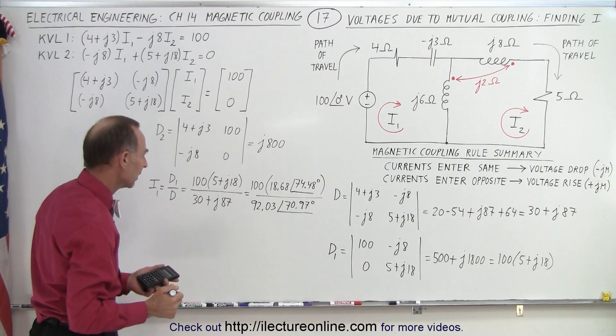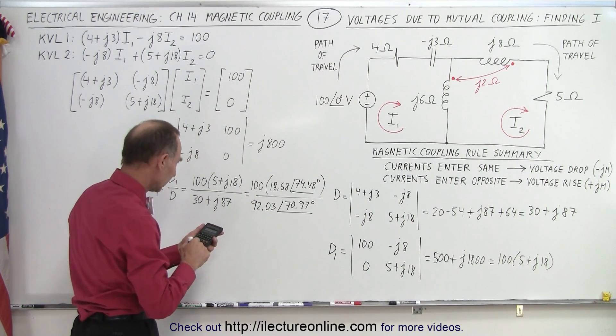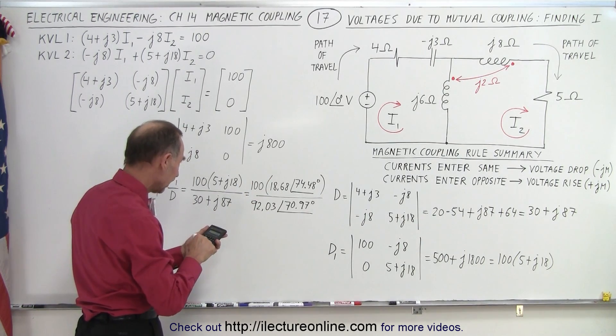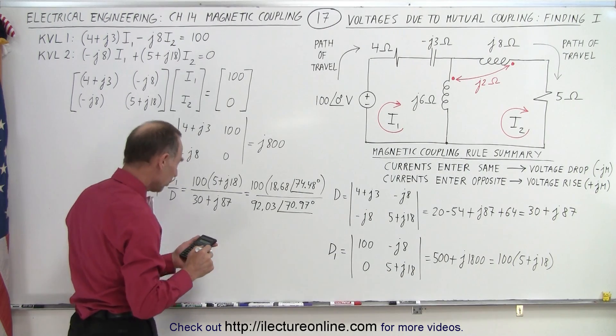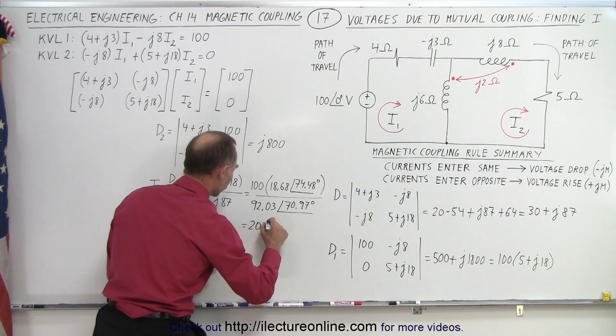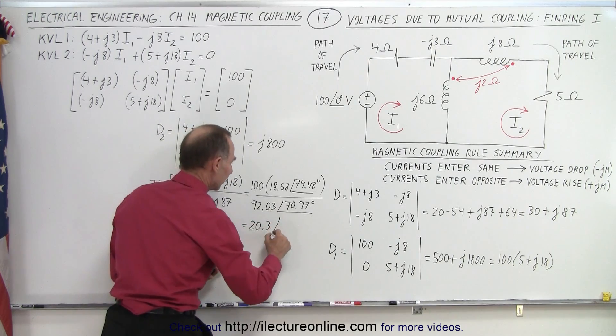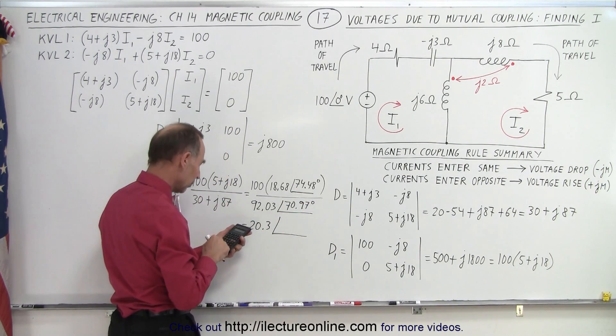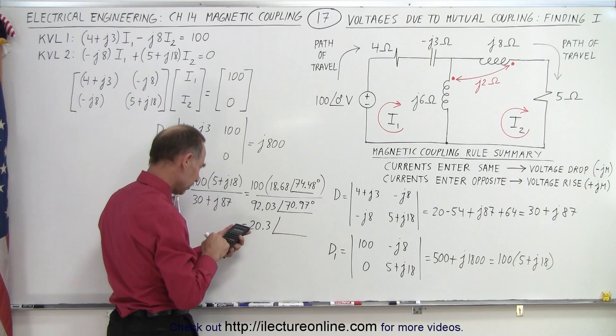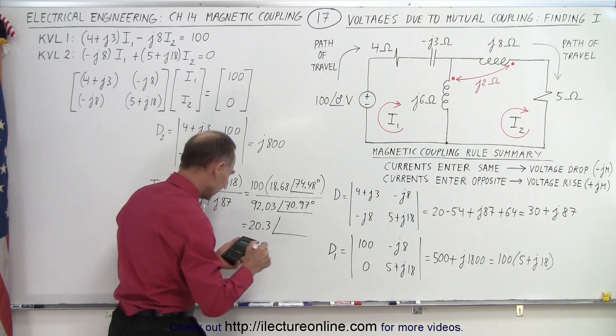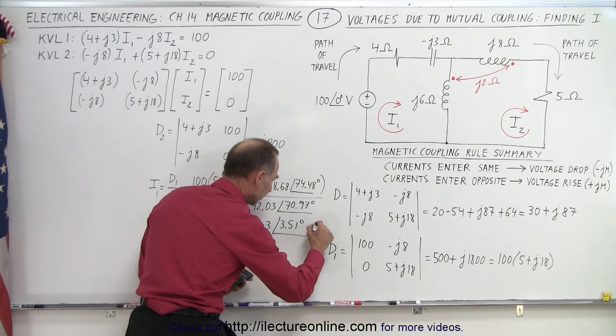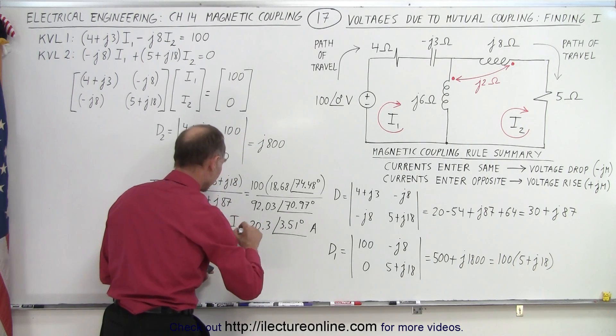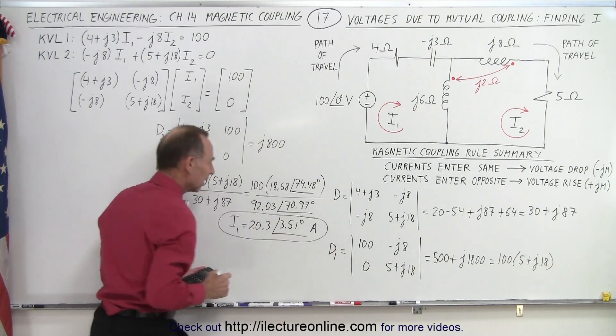So now we go ahead and divide the numerator by the denominator. So that gives us 100 times 18.68 divided by 92.03 equals, that's 20.3. So this is equal to 20.3. And for the phase angle, we have this minus that, so we have 74.48 minus 70.97, that gives us 3.51 degrees. And that would be in amps of course, because we're looking for the current. So I1 equals this current right here.